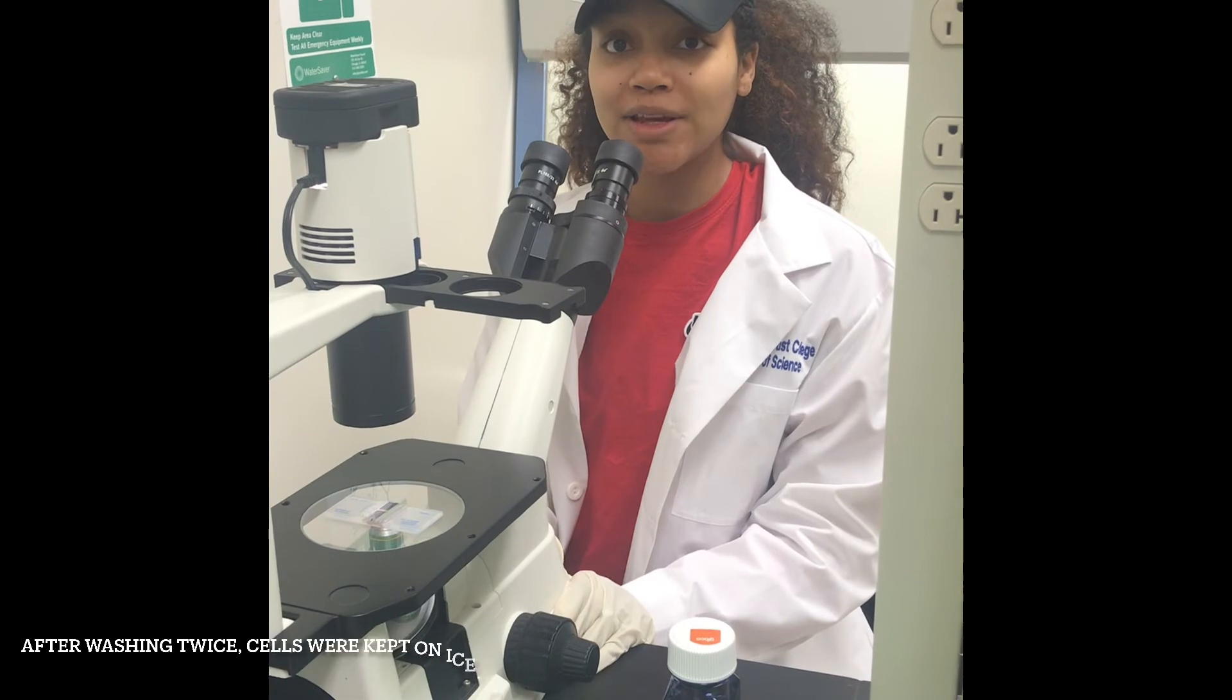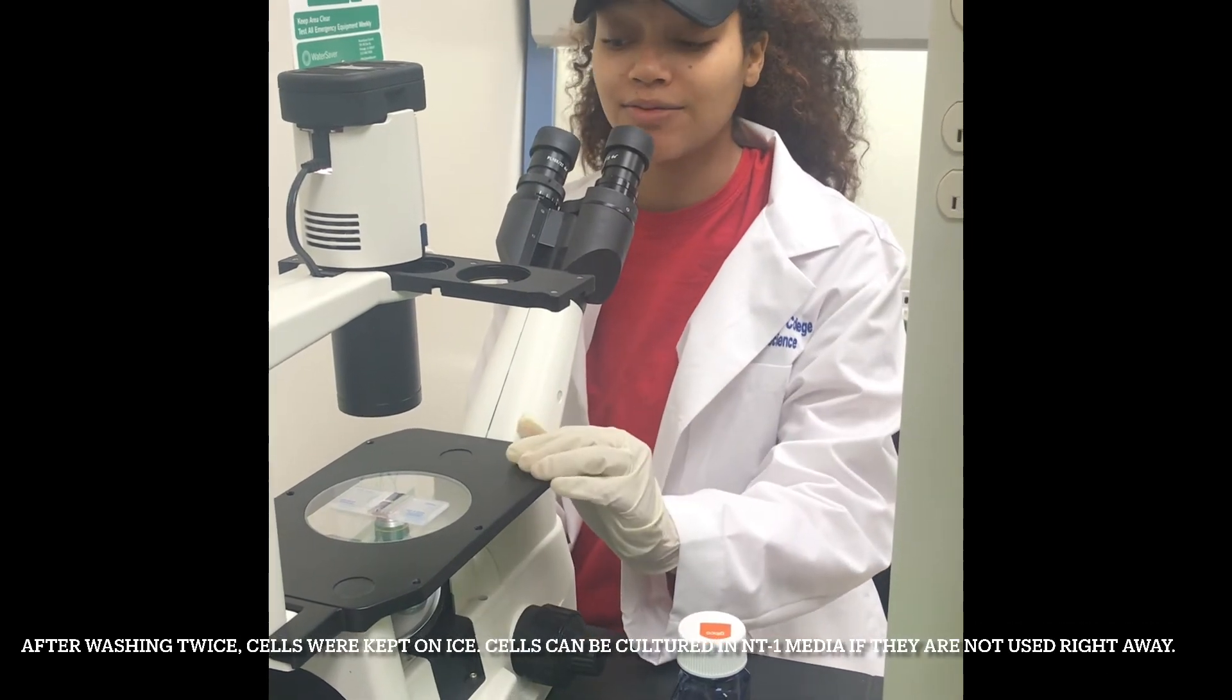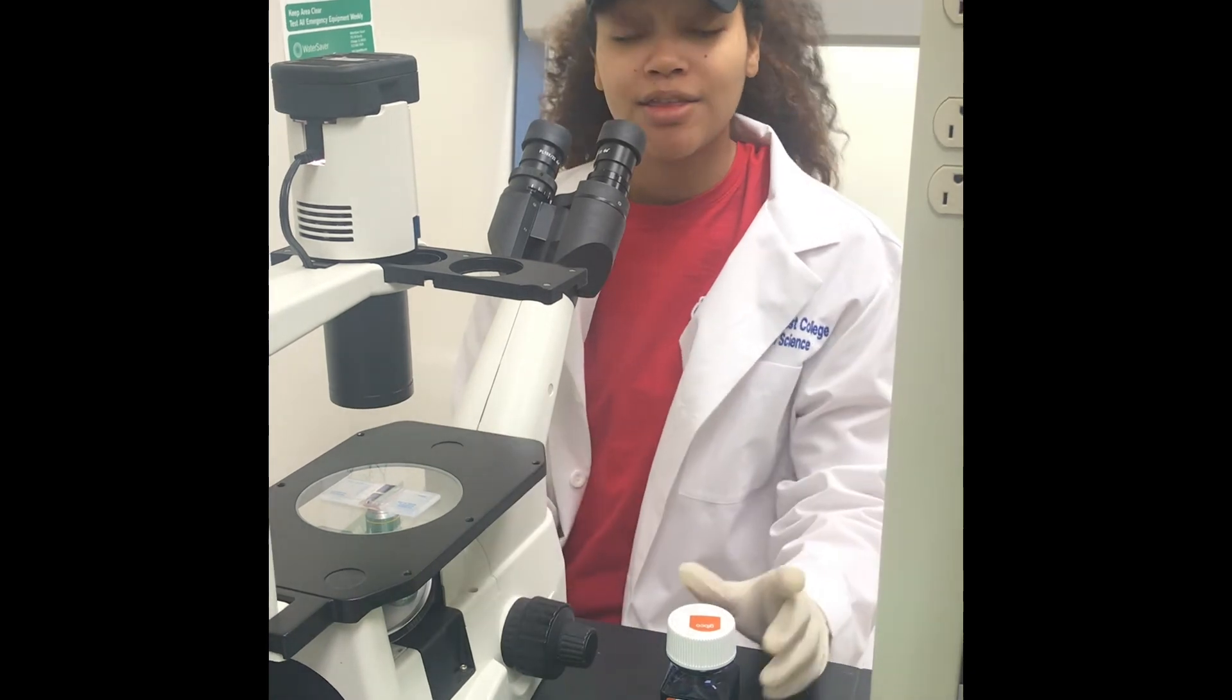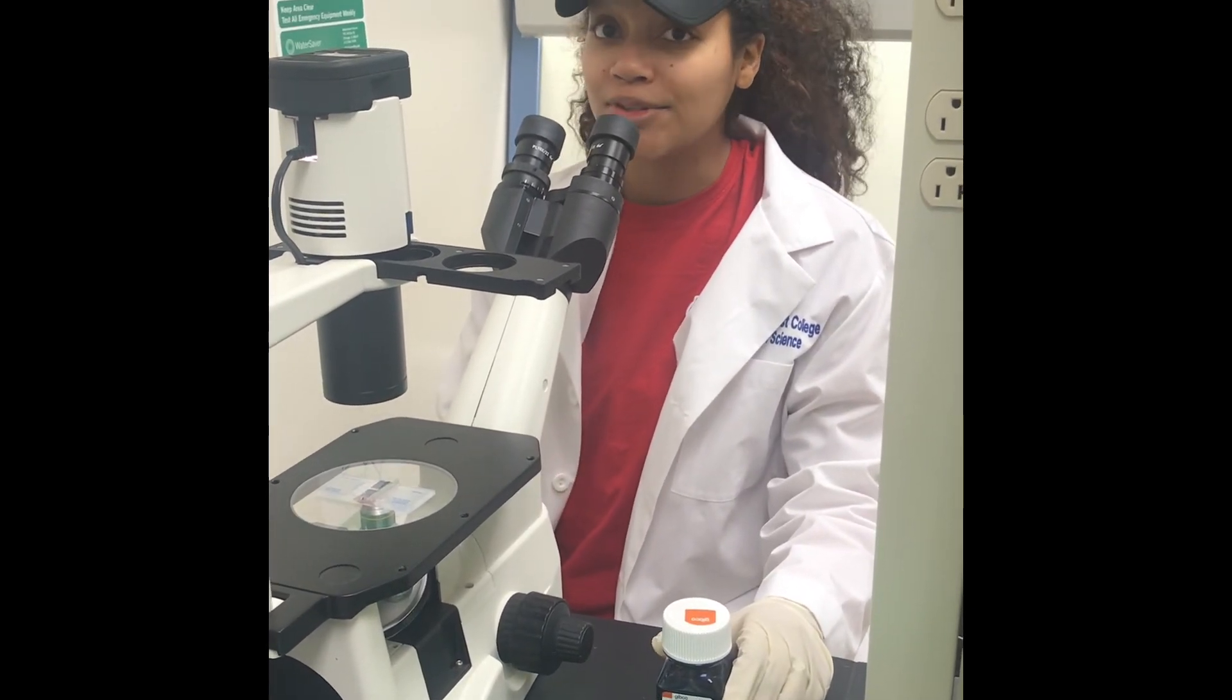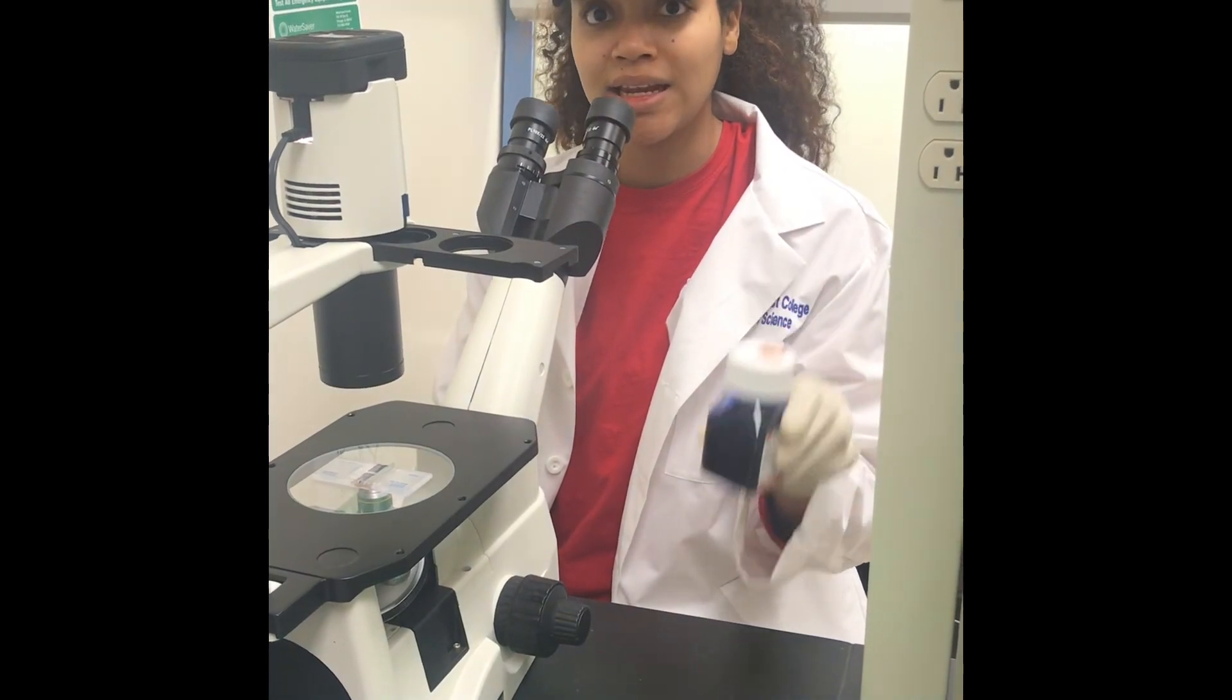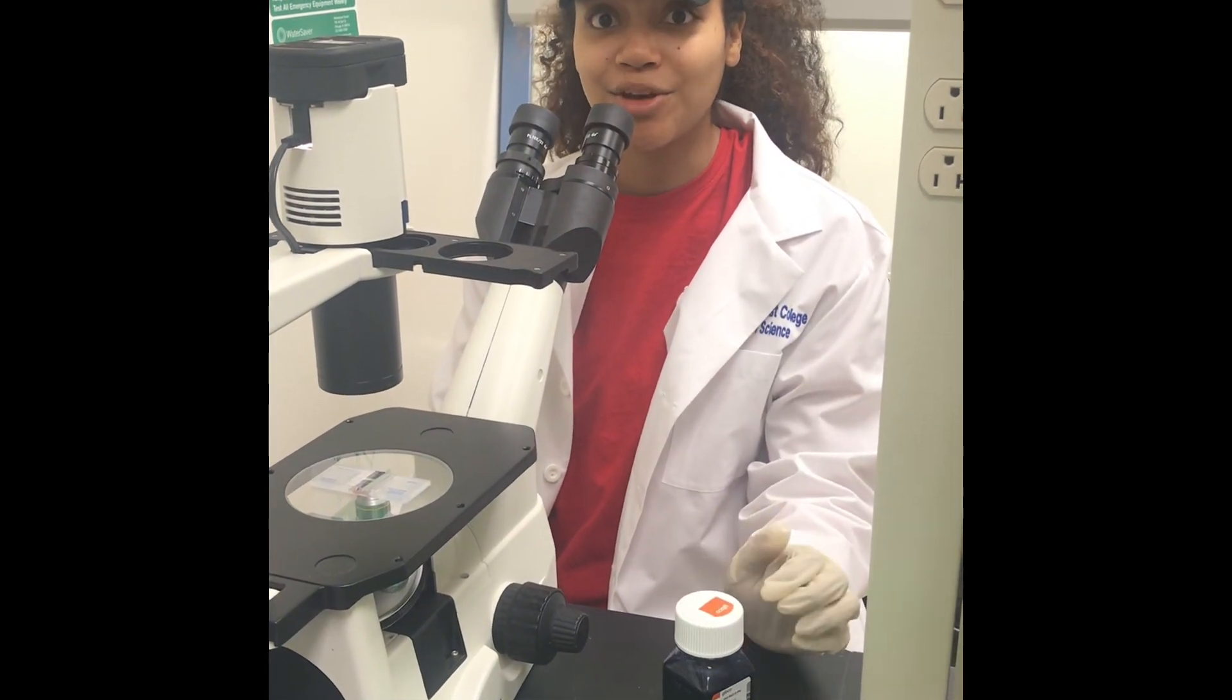So now I will use my light microscope to count the viable and non-viable cells in my hemocytometer. The viable cells will appear clear and the non-viable cells will appear blue because the trypan blue stain penetrates the cell membrane of the dead cells.